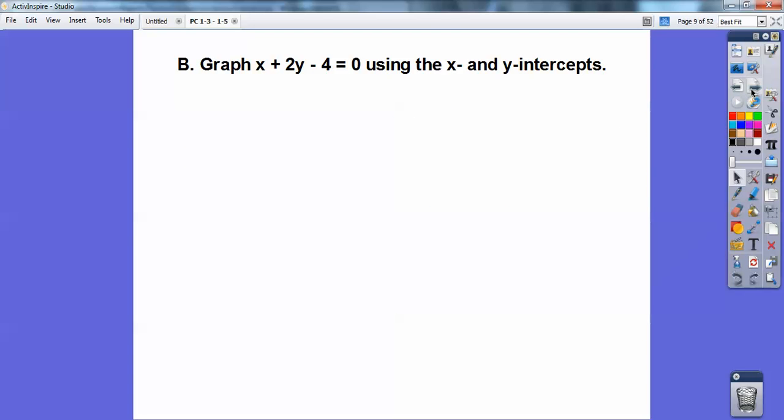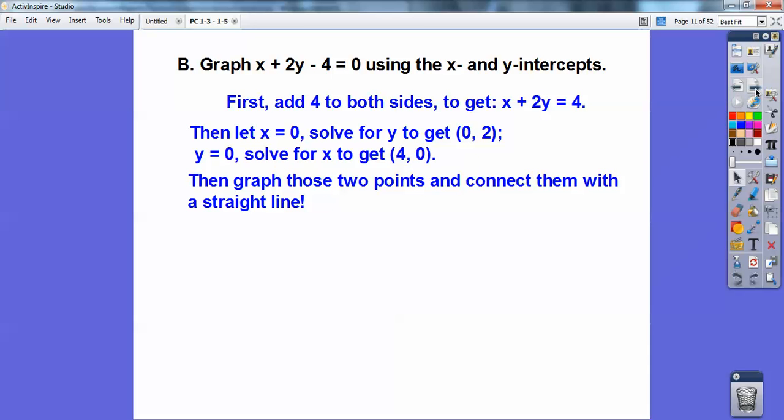Graph this equation using the x and y intercepts. I would like to do first is get the four on both sides. This is typically what I've seen as standard form. Now let x be zero. So this x goes away and you have 2y equals 4, so y would be 2. That would be my y-intercept, zero comma two. When y is zero, cover up the 2y and you're left with x equals 4. That's the x-intercept. Then graph those two points and you're done.